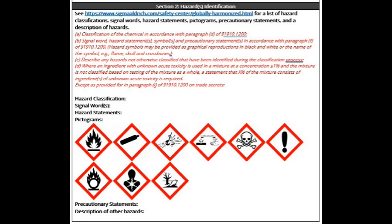The final line in this section applies when an ingredient with unknown acute toxicity is used in a mixture at a concentration of less than one percent and the mixture is not classified based on testing of the mixture as a whole. In that case, a statement is required: 'X percent of the mixture consists of an ingredient of unknown acute toxicity.' This allows a manufacturer to state that a chemical is present that has not been evaluated and is present at a certain percentage of the volume. As an example: 'This product contains less than one percent of dehydrated oxygen.'